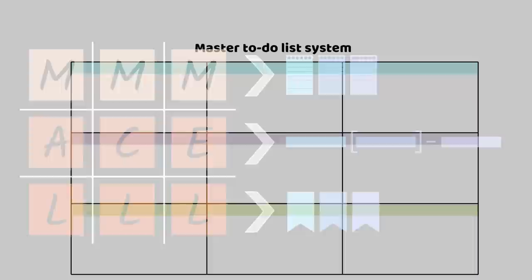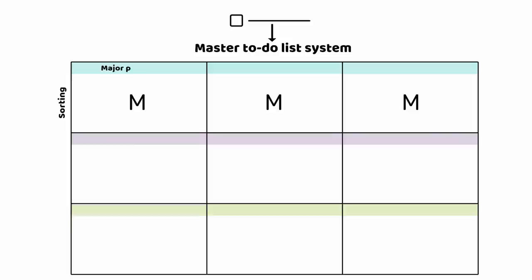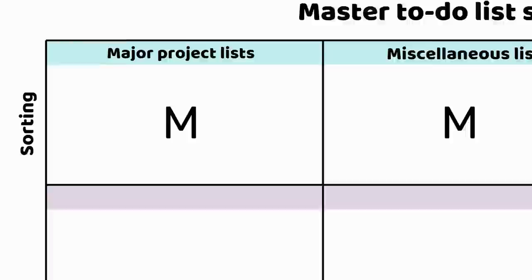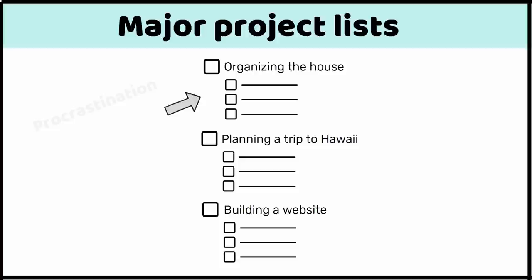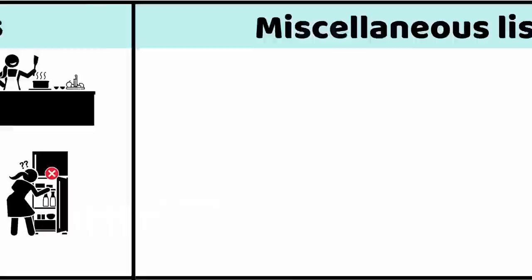First, the MMM sorting method. Every task you put into your master to-do list system either needs to go on a major project list, miscellaneous list, or maybe list. Create a separate to-do list for every major project you're working on — like organizing the house, planning a trip to Hawaii, or building a website. When you have project-specific to-do lists, the resistance to working on any one project decreases because you have a list of next steps ready and waiting in one convenient location. It's like starting to cook a recipe with all the necessary ingredients laid out on the counter, rather than having to search through the fridge.